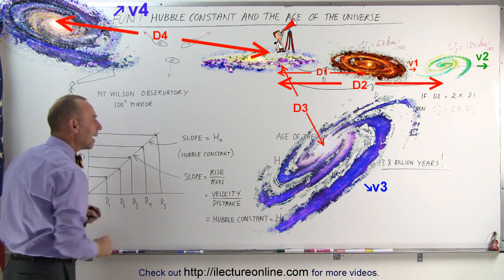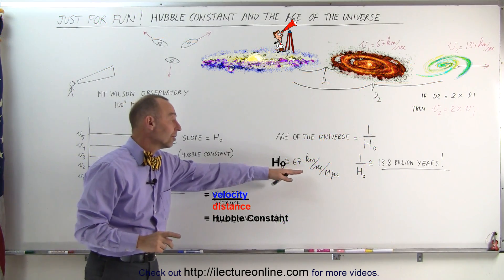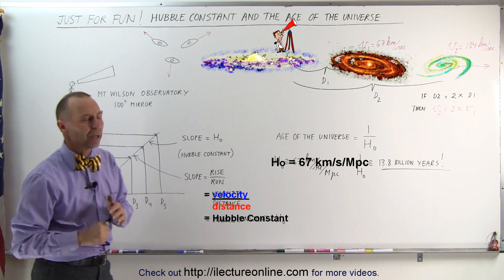The slope of that line, that ratio, became the Hubble constant. Now we know that Hubble constant is 67 kilometers per second per megaparsec.